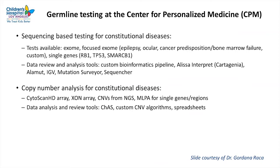At our center on the germline side, we do clinical exome sequencing, focused exome sequencing, and some single gene testing. We use a custom bioinformatics pipeline for exome sequencing variant calling, ELISA Interpret (previously known as Cartagenia) for variant interpretation, Element as an additional tool for variant review, IGV for manual inspection of sequence variants, Mutation Surveyor and Sequencher for standard sequencing results review. For copy number variants, we use CytoScan HD array and exon array for intragenic CNV detection.